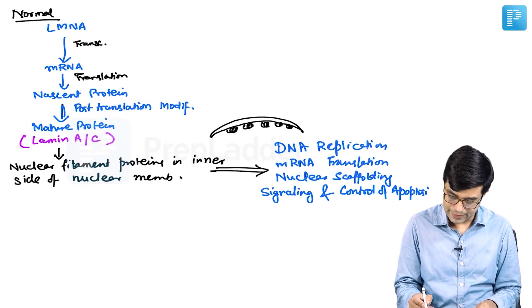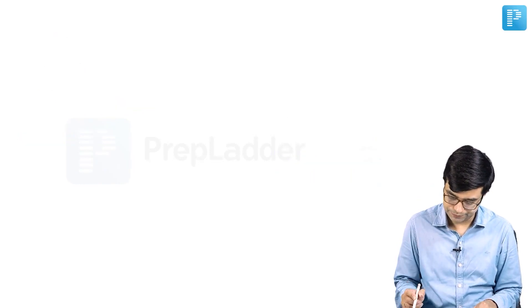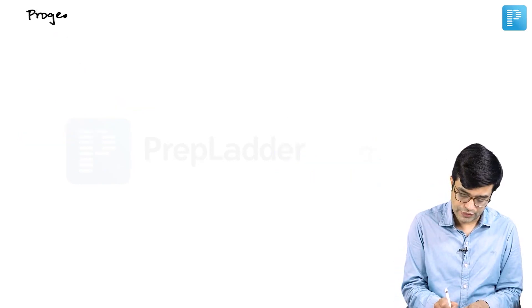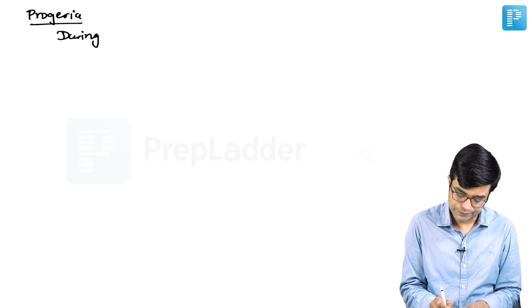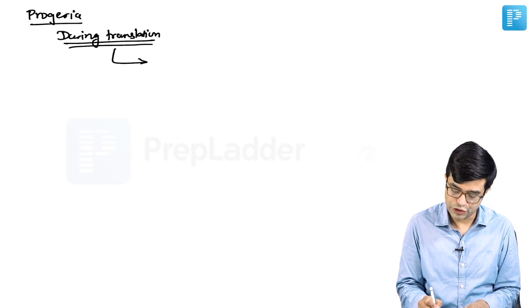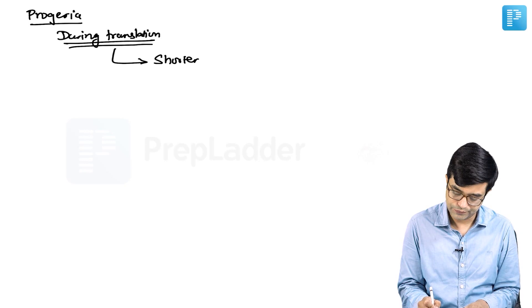In a patient with progeria, during translation, you will have a shortened protein getting formed.